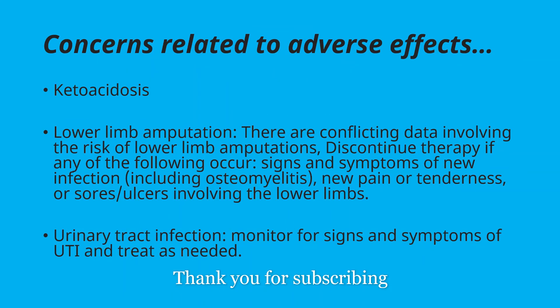Other adverse effects include ketoacidosis and lower limb amputation. There is also conflicting data on amputation risk, but signs and symptoms of infection in the lower extremities — including osteomyelitis, new pain, tenderness, or ulcers in the lower limbs — may be telltale signs and we need to discontinue therapy if these occur. Additionally, bacterial urinary tract infections are a concern; we should monitor for signs and symptoms and treat early.